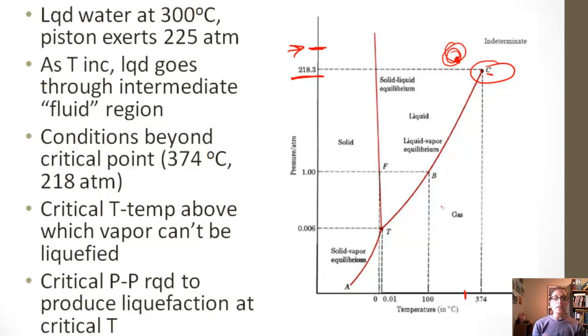The critical temperature is the temperature above which vapor cannot be liquefied. So once we go above this 374, we're in this indeterminate area, which is that fluid region. Our critical pressure is the pressure required to produce liquefied at the critical temperature. Once we go beyond this point, we're kind of going into this indeterminate unknown land.